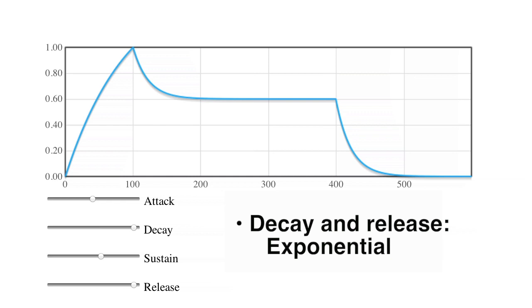And this mimics natural plucked and struck instruments, piano, guitar, and drums, for example. The exponential shape comes from the discharging of a capacitor in hardware generators.